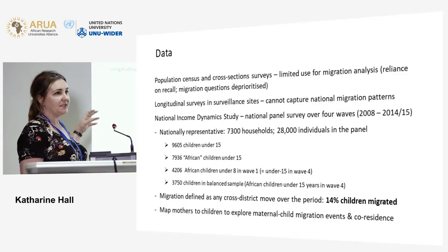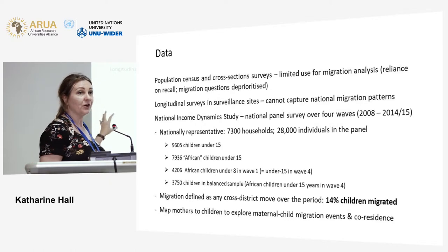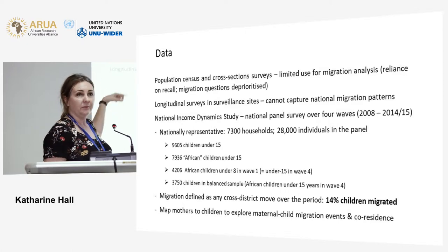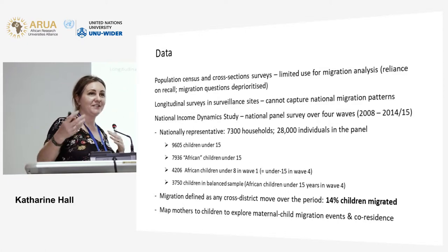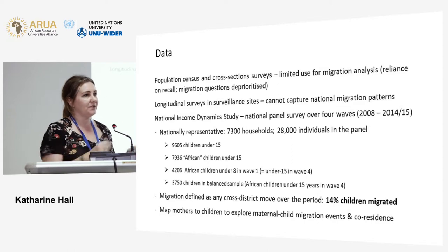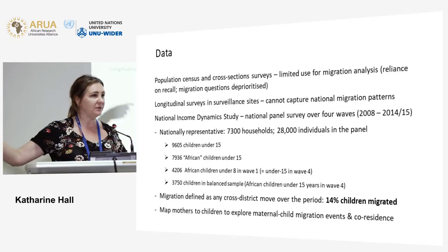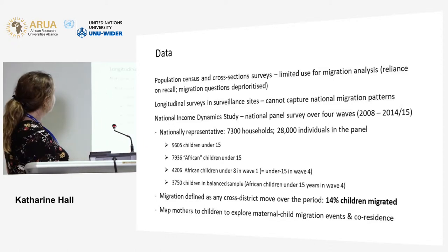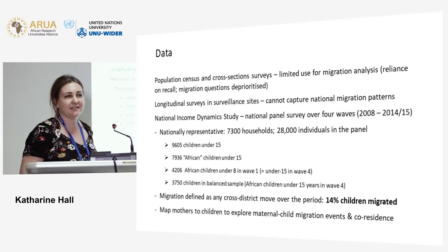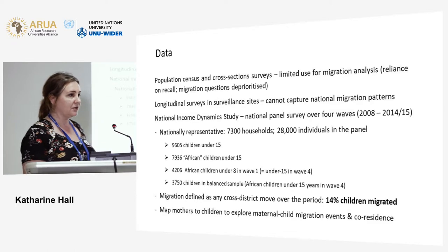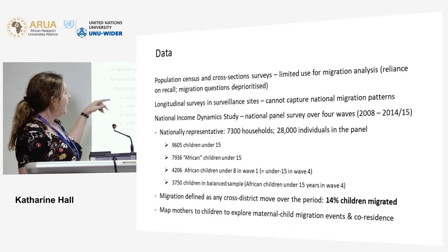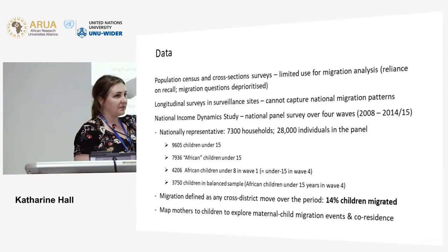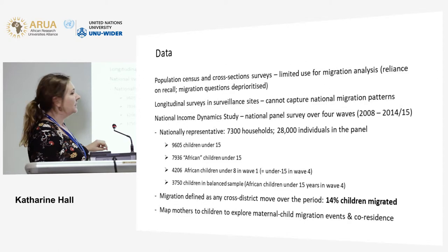There have been two demographic surveillance sites with ongoing panel studies, producing good migration work, but a major problem for studying internal migration across the country is that once people move out of a surveillance site, they are lost to the panel. Fortunately, we now have the National Income Dynamics Study — our first nationally representative panel survey — with four waves of data: baseline in 2008, and again in 2010, 2012, and 2014–15.